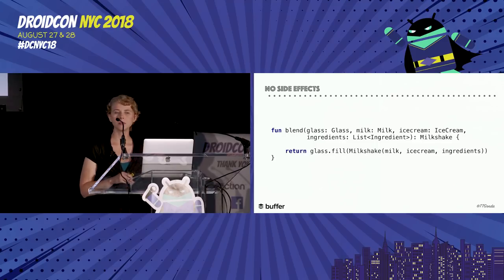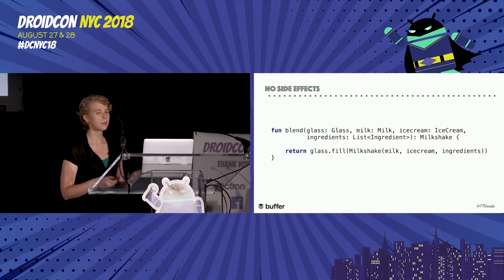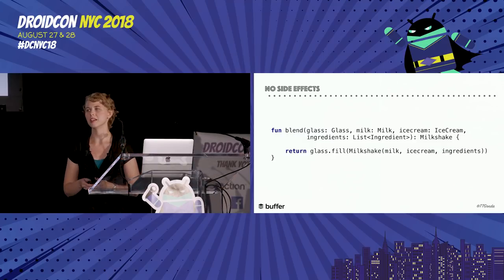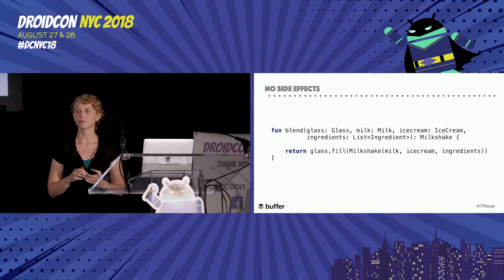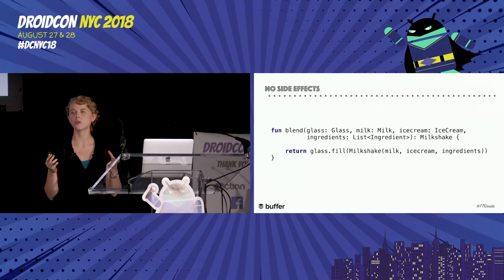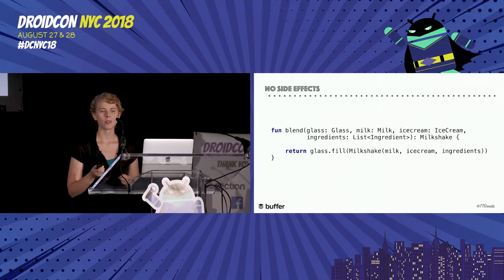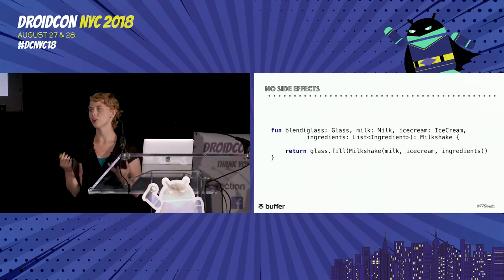I realize that sometimes side effects can be unavoidable. There's going to be a time when we need to save something to the database and retrieve it later, and various different things, especially when interacting with the Android system. But pushing these impure functions to the edges of your code, and having as many of your own functions pure as possible, will help minimize surprises and bring clarity. If you can isolate them, other parts of your code don't have to depend on them.